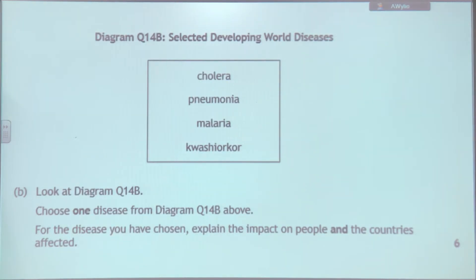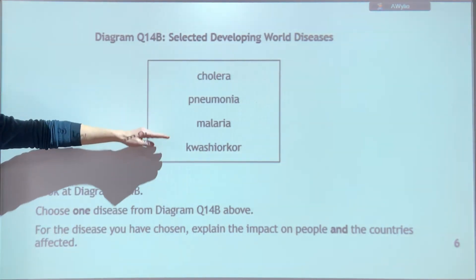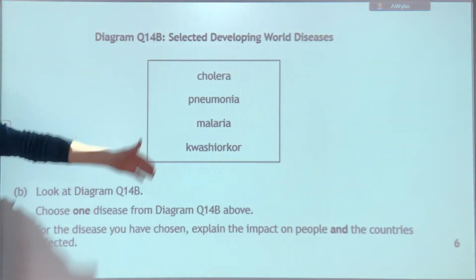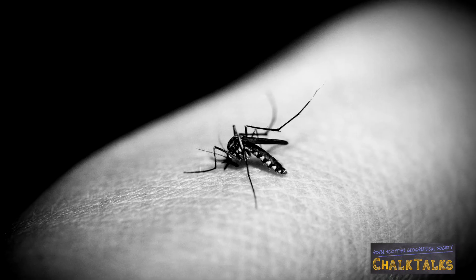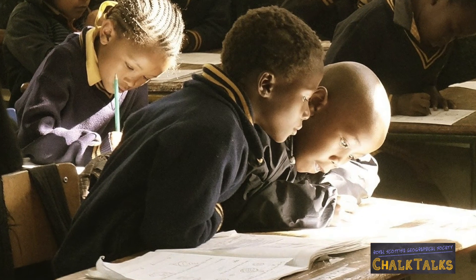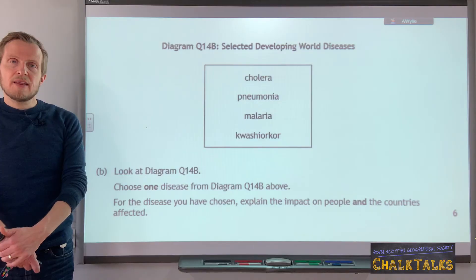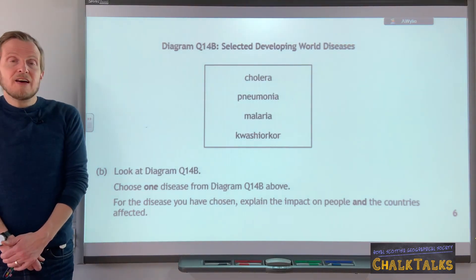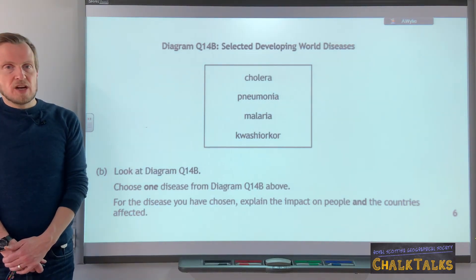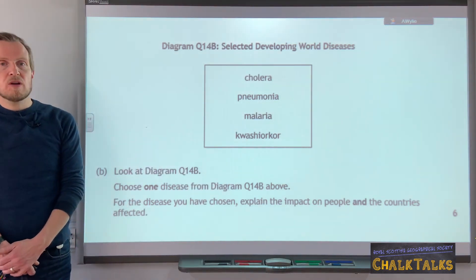In this second example of an explained question, we are being asked to explain the impact of a disease we've studied — in this case, one of the developing world diseases. The impact means how the disease is affecting the population and the country itself. It's a six-mark question, so you'd be looking for six different impacts. For example, if malaria was causing children to be ill and miss school, you would then explain that this means they miss out on their education, impacting their future. You should also be able to do the same for the three developed world diseases as well as HIV and AIDS.